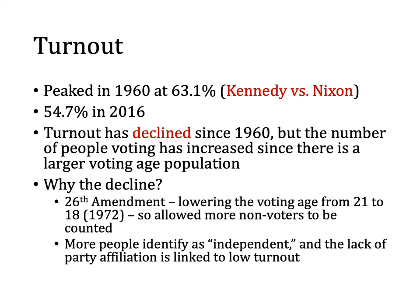In 1972, the 26th Amendment was passed to the United States Constitution, lowering the voting age from 21 to 18. The theory was that 18-year-olds were being drafted by a government they didn't elect — because they weren't eligible to vote — to go fight in a war. So the thought was: if you're old enough to be drafted, you should be old enough to vote. However, the voting rate of 18-, 19-, and 20-year-olds is historically very low. Basically, all we did was add another large group of people who weren't going to vote anyway, which dragged the voter turnout down a bit more.